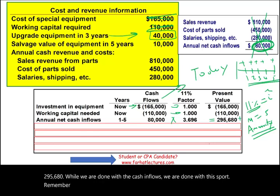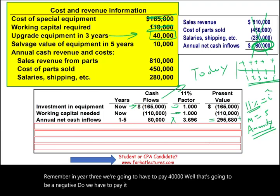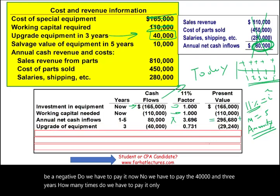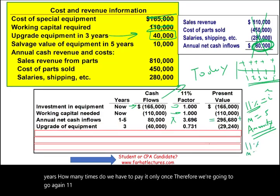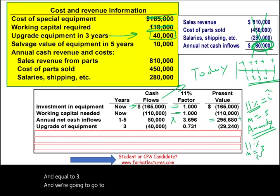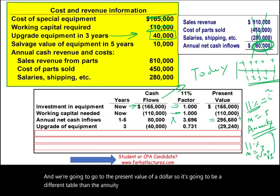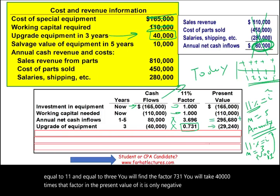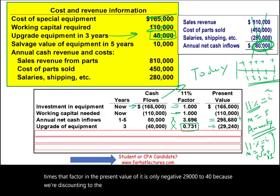In year three, we have to pay $40,000 — that's a negative, and we pay it only once. So we use the present value of a single dollar table, not the annuity table. With I equal to 11% and n equal to 3, the factor is 0.731. Taking $40,000 times 0.731 gives a present value of negative $29,240.